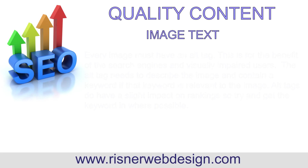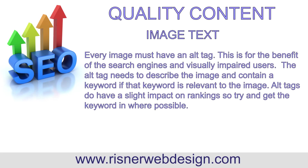Next is image text. Every image must have an alt tag, for the benefit of search engines and visually impaired users. The alt tag needs to describe the image and contain a keyword if that keyword is relevant to the image. Alt tags do have a slight impact on rankings, so try and get the keyword in where possible. This concludes the quality content category.